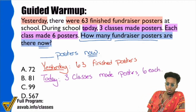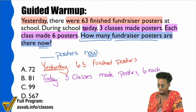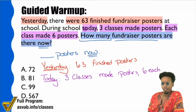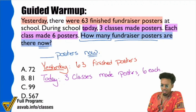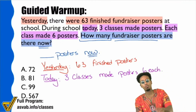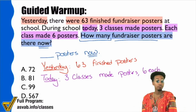Everyone, what are we supposed to do here? Are we supposed to do 63 times three times six? 63 plus three plus six? What are we supposed to be doing? I see multiply six times three, and I see some saying add — add the class posters. For those saying multiply six times three, you're correct. You're right.